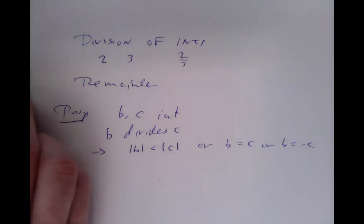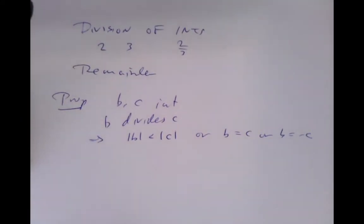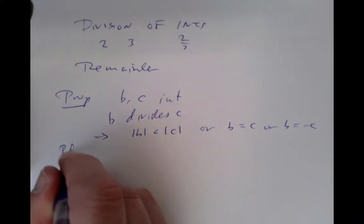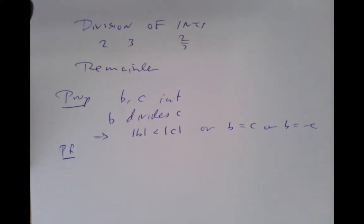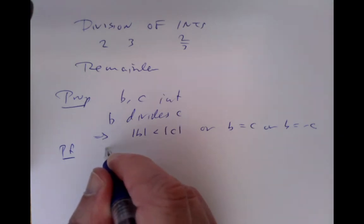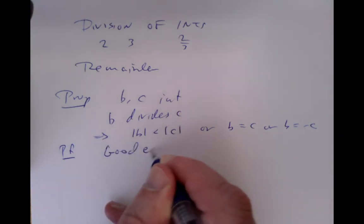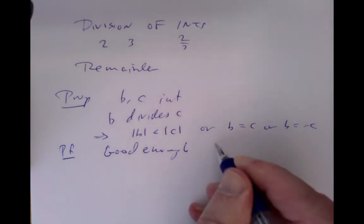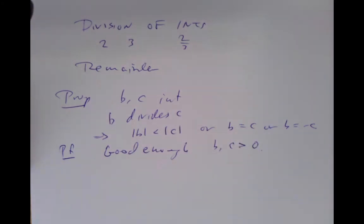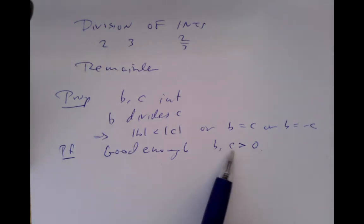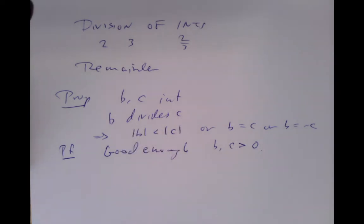So we want to prove this. The first obvious remark is that it's good enough to assume that b and c are both positive. You can work out the cases of one or the other being zero, and if they're both negative, you can change the signs of both of them — that doesn't change the divisibility relationship or the statement. So it's good enough to just worry about the positive case.